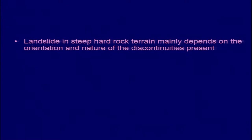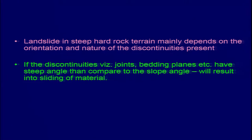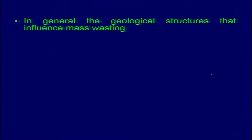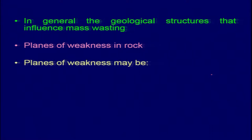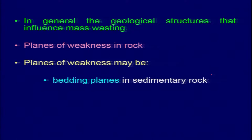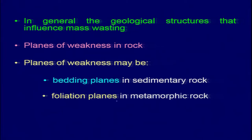Landslide in steep hard rock terrain mainly depends on the orientation and nature of discontinuities present — these could be either joints, bedding planes, etc. In general, the geological structures that can influence mass wasting include planes of weakness in rocks: bedding planes in sedimentary rocks or foliation in metamorphic rocks.